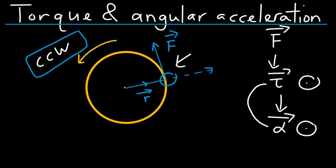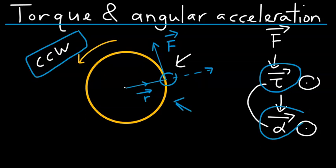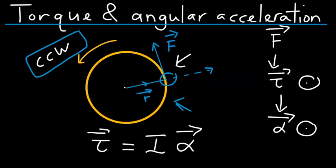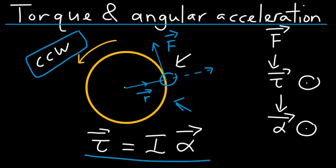These two vectors — torque and angular acceleration — are proportional to each other. That is, when you increase the amount of torque acting on this disk, the angular acceleration of this disk will also increase. The linear relationship between these two vectors, namely the torque and the angular acceleration, is given by this equation, where the constant of proportionality is the moment of inertia of this disk.